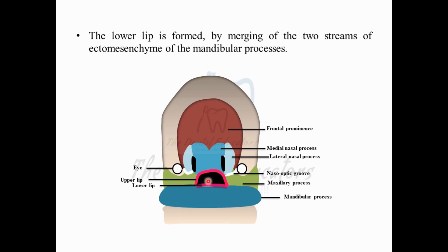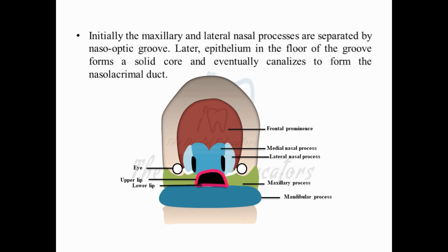Now we have the upper lip and the lower lip developed. The hollow black space is now referred to as the oral cavity, which has formed due to the fusion and formation of both the upper and lower lip. Still, one groove remains — between the lateral nasal process and the maxillary process — referred to as the naso-optic groove. Later on, the epithelium inside this naso-optic groove forms a solid core to form a canal, which at later stages is referred to as the nasolacrimal duct.